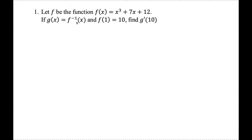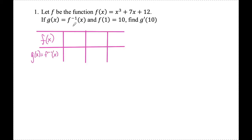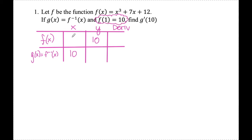Since g prime is the derivative of the inverse of f at x equals 10, I'll set up a similar table with rows for f and g (which is f inverse). I'm looking for g prime of 10, so x equals 10 goes in the g row. This means the original function f has a y value of 10. To find the corresponding x value algebraically, I'd have x cubed plus 7x plus 12 equals 10, which would be hard to solve — but they told us f(1) equals 10, so x equals 1.